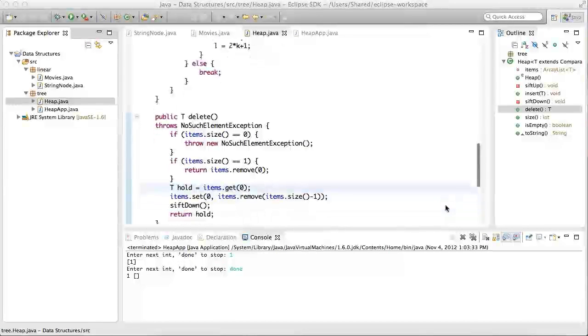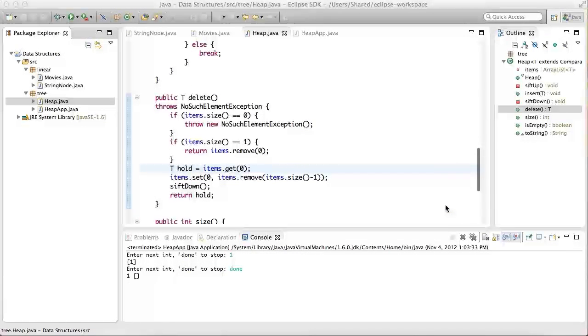The delete method takes a little more doing than insert, since there are some special conditions to be checked. First off, the method throws a no such element exception if the heap is empty. The second special condition happens when the heap has only one item. In this case, the item, which is at the first position of the array list, is removed and returned.